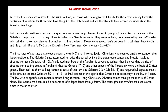The first stage of apostasy that swept through the early church involved Jewish Christians who seemed unable to abandon their Judaic traditions. The Galatian saints attempted to revise the gospel by including pagan observances and Mosaic rituals such as circumcision. As adopted members of the Abrahamic covenant, perhaps they believed that the rite of circumcision, so important in Abraham's day, and other aspects of the Mosaic law were the basis of Christ's gospel. Paul teaches in this epistle that Christ is not secondary to the law of Moses — only Christ can bring salvation.